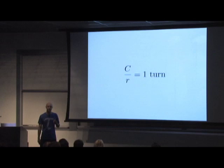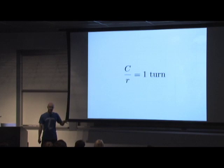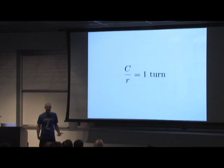He makes a strong case that C over R is the more natural circle constant, and he has a descriptive word for it — he calls it 'one turn.' Unfortunately, while descriptive, the word 'turn' isn't good in formulas. He also introduced a strange notation that didn't really catch on. In geek circles, people knew about this paper — it would show up on Reddit, on Hacker News — and yet it wasn't turning into a movement, nothing was happening.